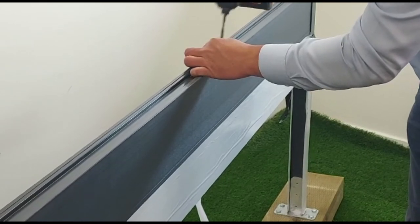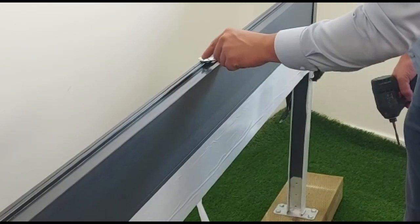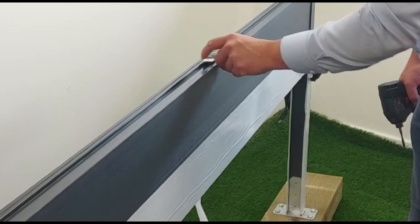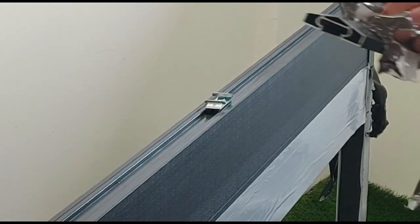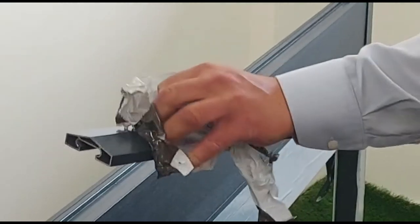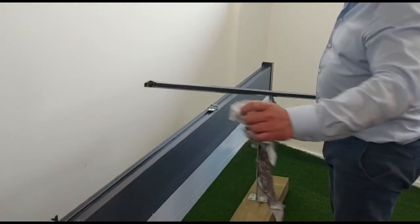So one screw loosely to enable us to be able to swivel that clip round. The next stage is to pull the film right off the capping, we don't want that on, so we'll take that off.